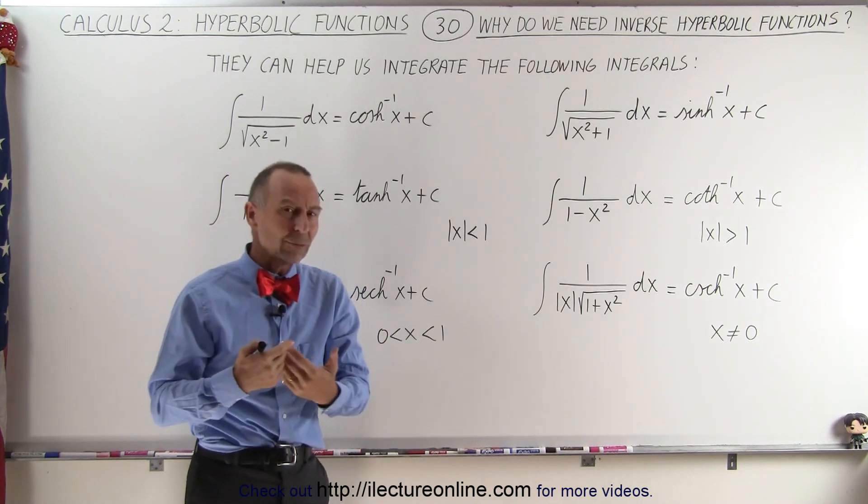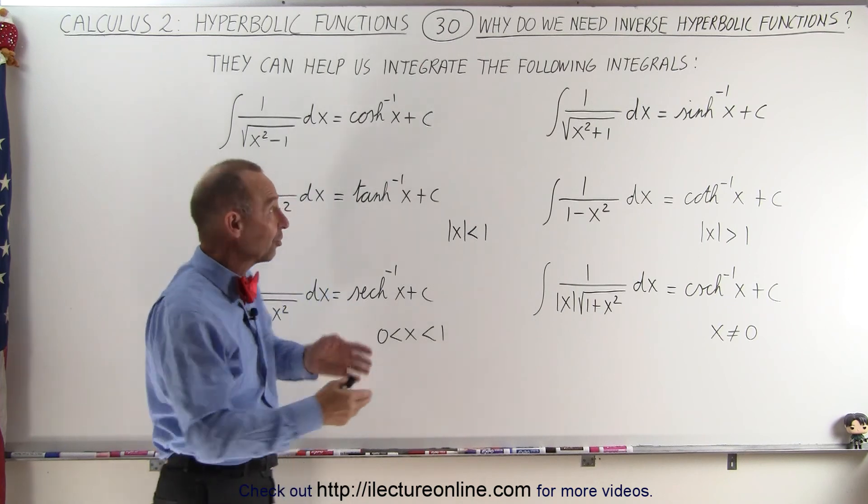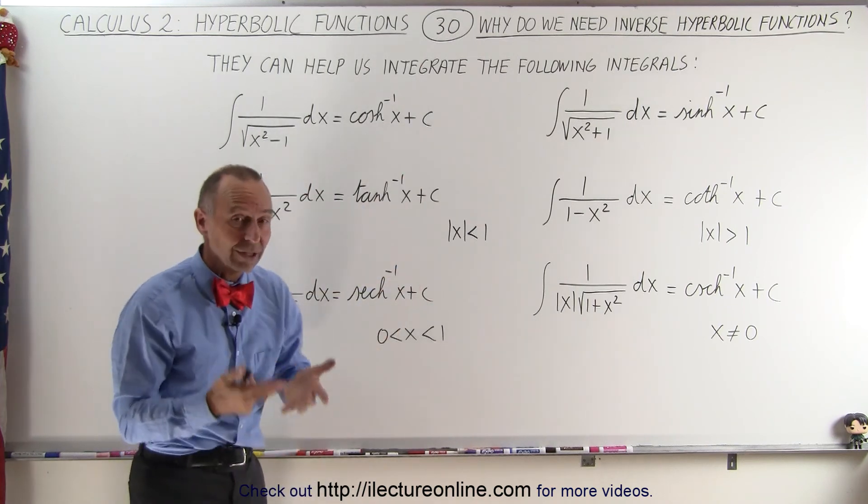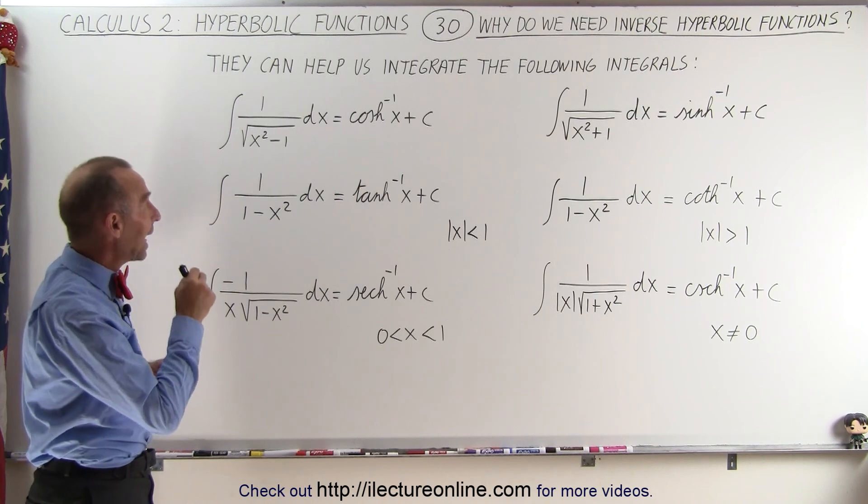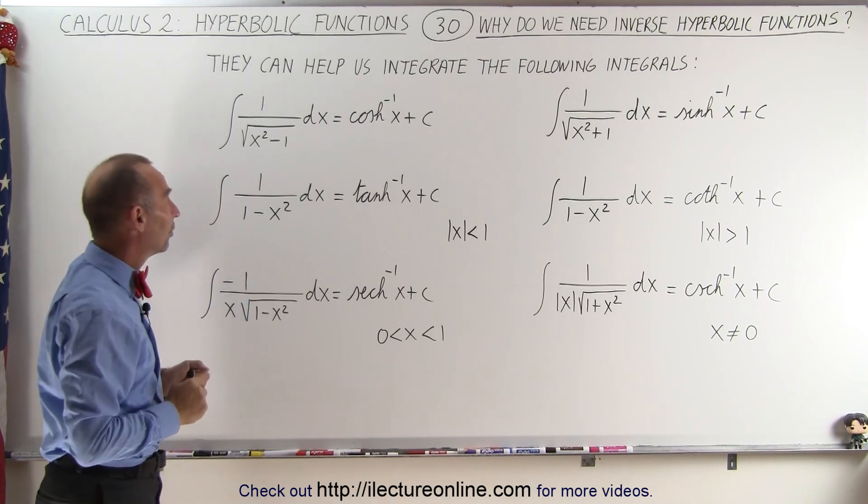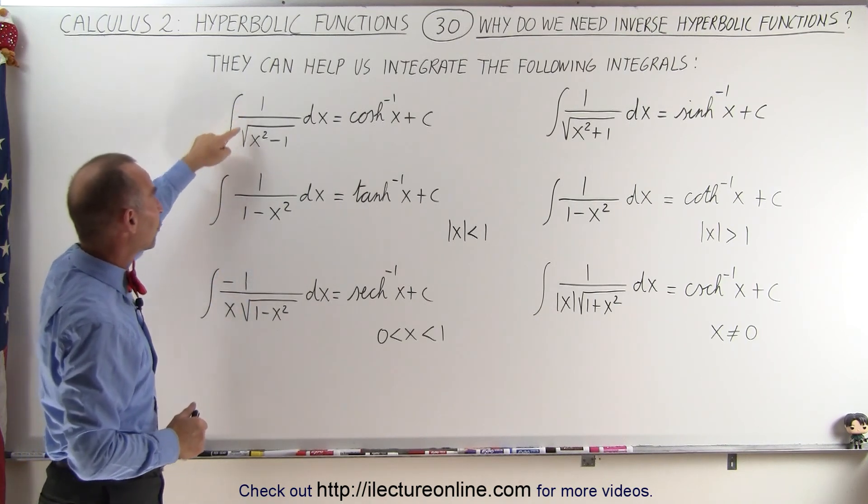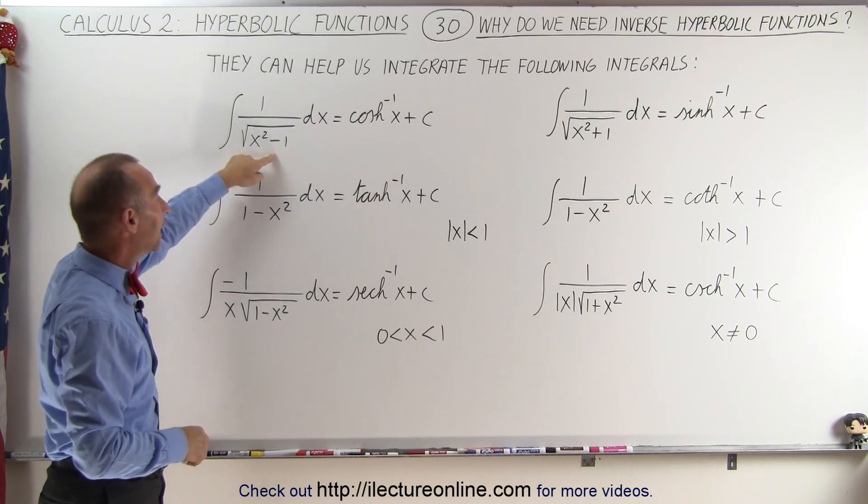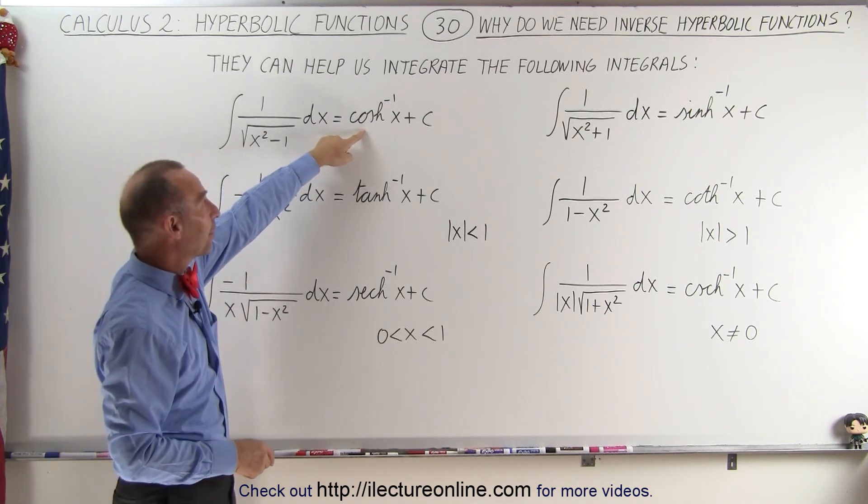Now, once we find what the inverse hyperbolic functions are for all of them, we can now see on the board here that there's a number of integrals that we're actually able to integrate. For example, the integral of 1 over the square root of x squared minus 1 is equal to the inverse hyperbolic cosine.